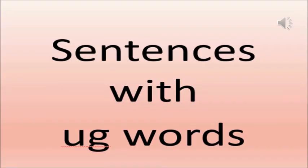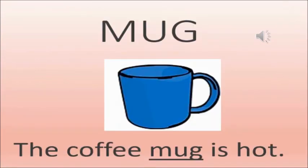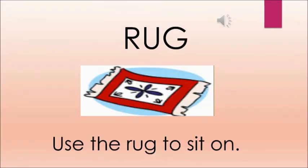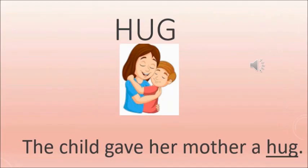Two sentences with UG words. The first is: the coffee mug is hot. The sentence with jug is: fill the jug with water. And the sentence with rug is: use the rug to sit on. Hug: the child gave her mother a hug.